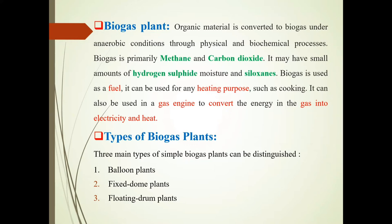Now, what are the types of biogas plants? Mainly there are three types: balloon plants, fixed dome plants, and floating drum plants.